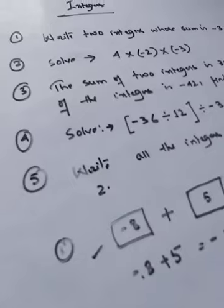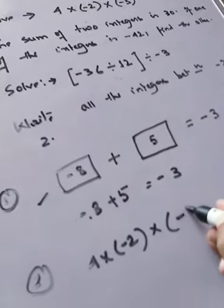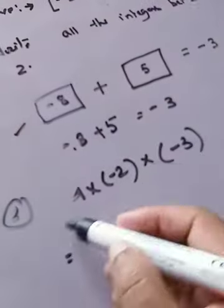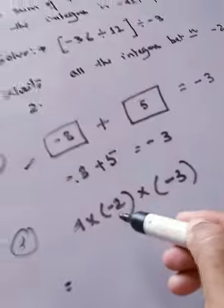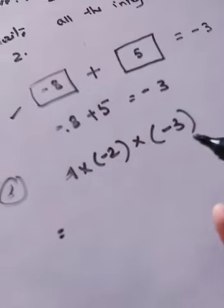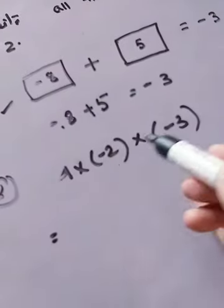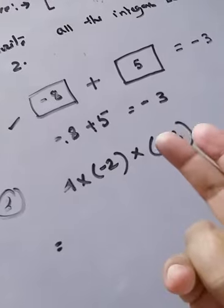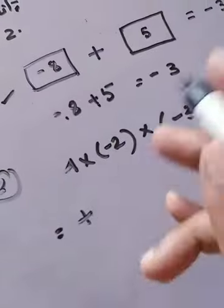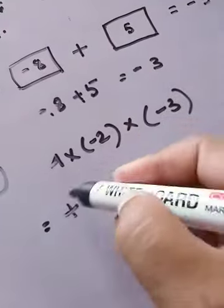Question number two: these are important one or two marks questions. The rule is — first multiply the signs. If the number of minus signs is odd, your answer will always be minus. If the number of minus signs is even, your answer will always be positive. Here there are two minus signs, and two is even, so the answer will come out positive.